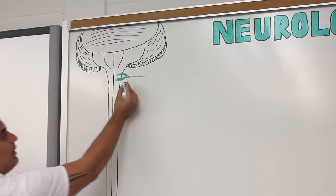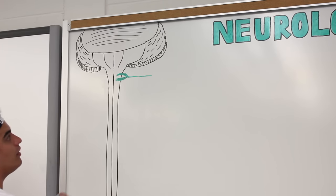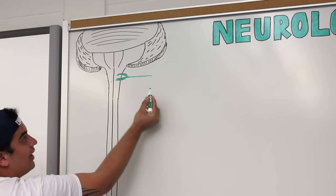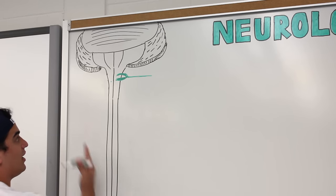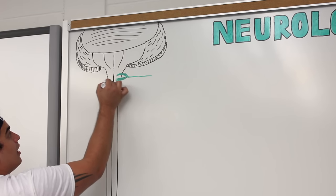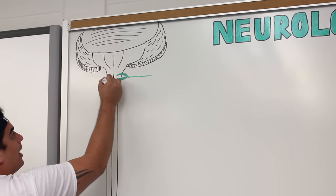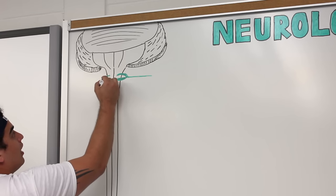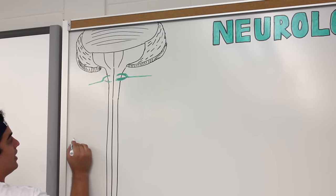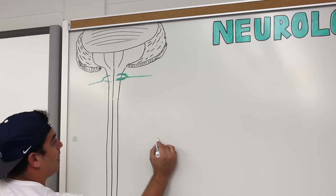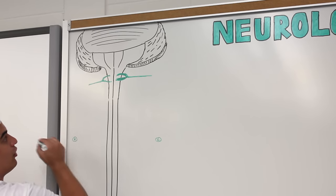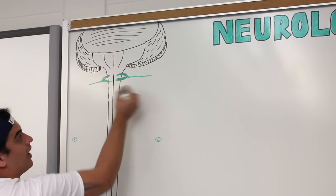These are going to make a spinal nerve, and importantly these are paired. So if there's one on the left side, you'll also have that same spinal nerve coming from the right side. So this would be a spinal nerve on one side and a spinal nerve on the other side.